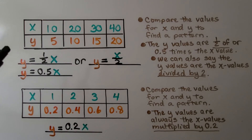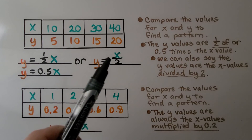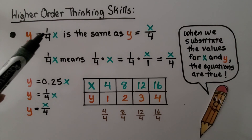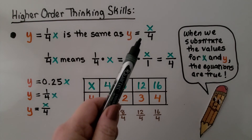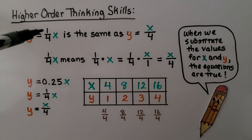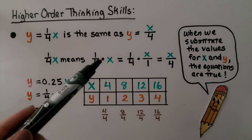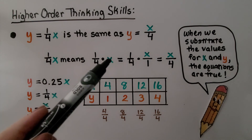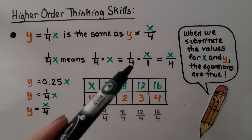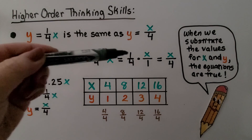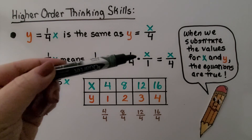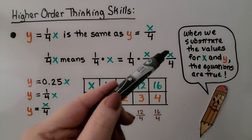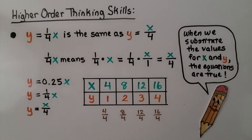We saw that one-half x is the same as x divided by 2. Similarly, y equals one-fourth x is the same as y equals x divided by 4. Because one-fourth times x is the same as one-fourth times x over 1, which when multiplied straight across gives x over 4 — that is, x divided by 4. We don't write the coefficient of 1, so we simply write x over 4.